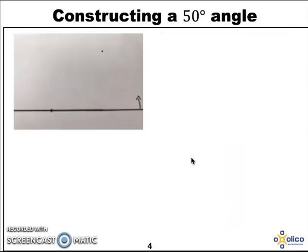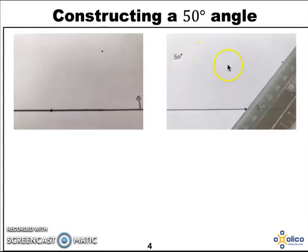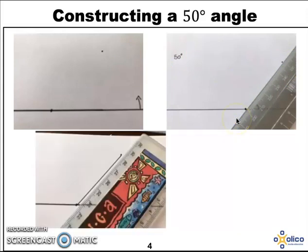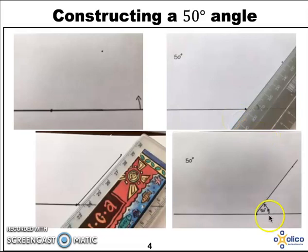Once you have done that, you can take your protractor away and you will have the point that you started with on the line and the point that you have made. Take your ruler and join the two points with a straight line and there you have your 50 degree angle.